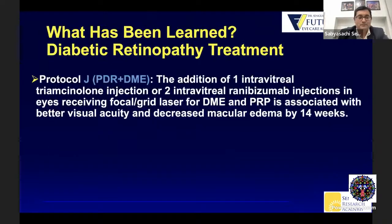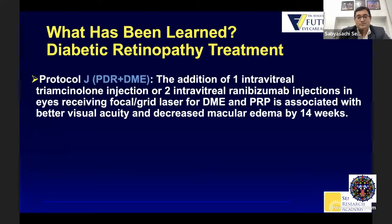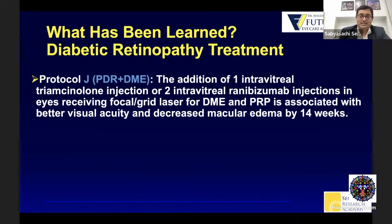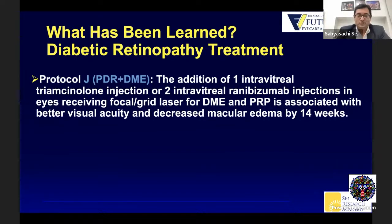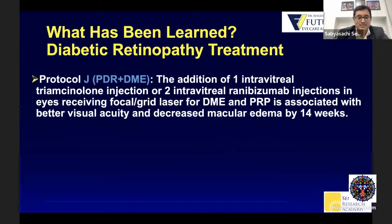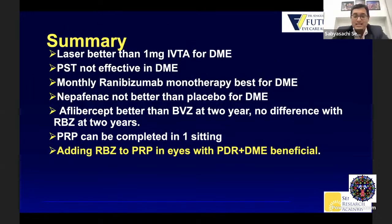Protocol J said that the addition of one intravitreal triamcinolone injection or two intravitreal ranibizumab injections in eyes receiving focal grid laser for DME and PRP is associated with better visual acuity and decreased macular edema by 14 weeks. So if somebody has a combination of PDR and DME — where PRP is needed for the PDR component and injections are needed for the DME — this protocol clearly showed that when patients have PDR with DME, an intravitreal anti-VEGF agent definitely helps. Summary: adding ranibizumab to PRP in eyes with PDR plus DME was beneficial.